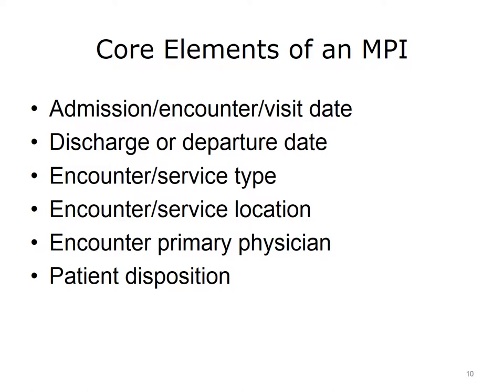More core elements of an MPI according to AHIMA 2010-B include: Address — the address or location of the patient's residence, including street address, other designation such as apartment number, city, state, province, zip or postal code, country, and type of address such as permanent or mailing. Telephone number: the number at which the patient can be contacted, which may be a home or business number or the number of a friend, neighbor, or relative. Alias or previous names: any names by which the patient has been known other than the current legal name, including nicknames, maiden name, or previously legally changed names; all previous names available should be converted and retained.